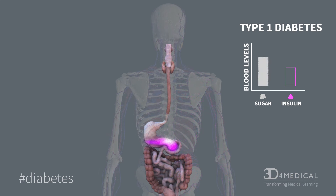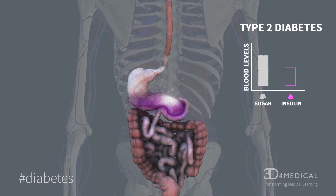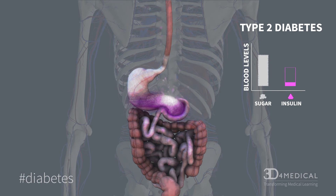In diabetes, either the pancreas does not make insulin, known as type 1 diabetes, or there is not enough insulin being produced in response to the high level of sugar consumed and cells in the body may have become unresponsive to the insulin that is produced, known as type 2 diabetes.